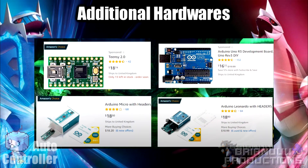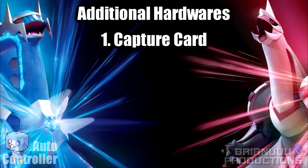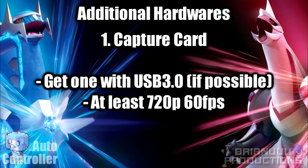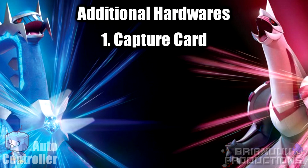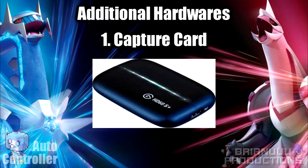By this point, you should already have either an Arduino Uno, Neon Auto, Macro, or a Teensy. The first thing you need to buy is a capture card. Capture cards come in a large range of prices. In general, you should get one with USB 3.0 if possible, running at 720p 60fps at minimum to get the best video quality and minimized latency. There are three types of capture cards. Pass-through gives the highest quality for both TV and PC but is also the most expensive, ranging from $40 to above $100. If you want to stream, these are the ones you want to get, like Elgato or Avermedia.